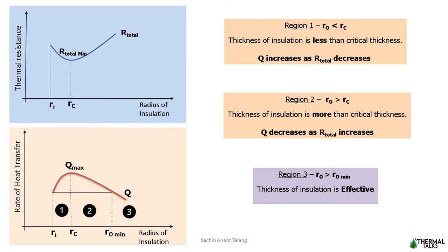Finally, we can project a line parallel from the rate of heat transfer at value Ri until it reaches the heat transfer curve on the other side. The radius at that point is called the minimum thickness of insulation, beyond which the insulation is effective. This is not merely a theoretical explanation; we can easily evaluate this by the thermal resistance equation.